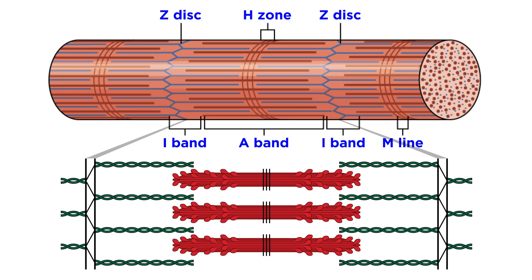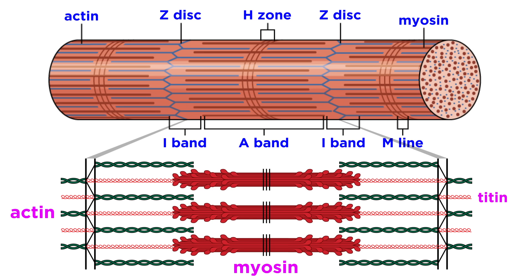If we zoom in even more, we can see the myofilaments that make up these regions. As we discussed previously, the thick filaments contain myosin, and these extend across the A band, connected at the M line. The thin filaments contain actin, extending across the I band and into the A band. There are also elastic filaments made of titin, spanning from the Z discs to the thick filament, and then continuing on, acting as the core of the thick filament.